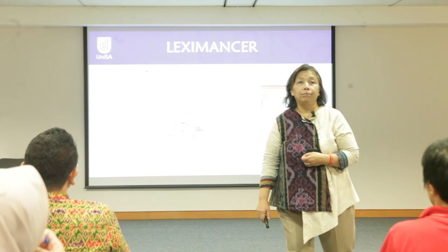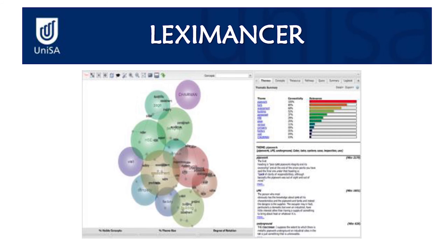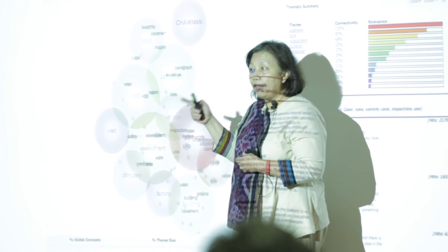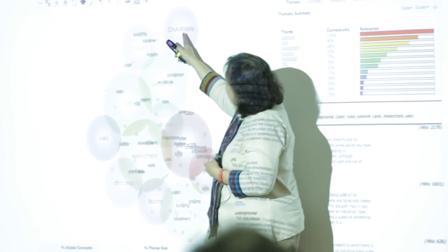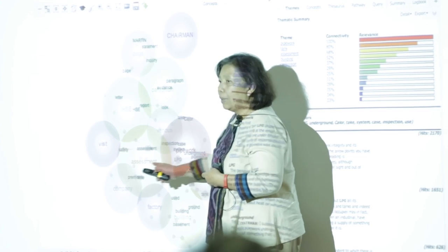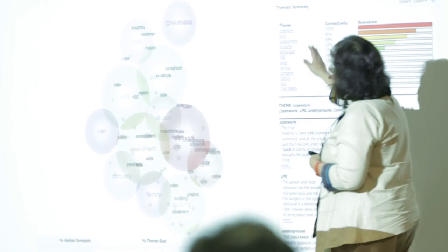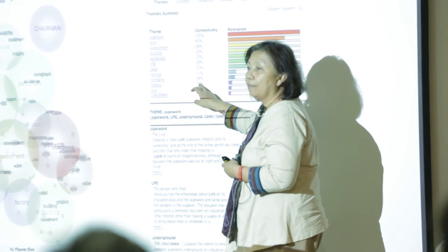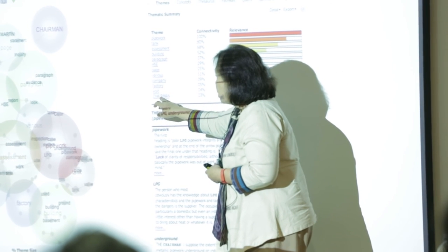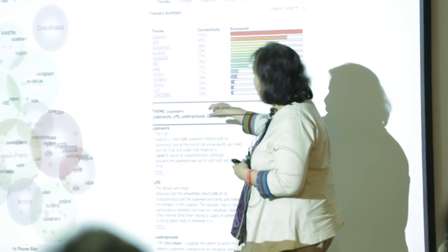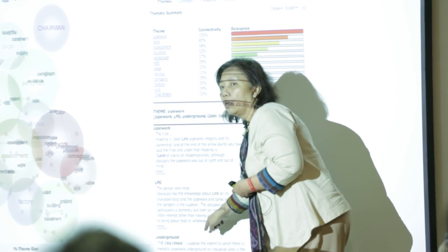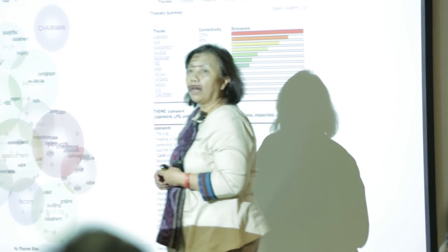This is Lexi Mancer. It looks complicated but it's not. The difference between Lexi Mancer and NVivo is that in Lexi Mancer, the coding is done automatically — the software creates the codes, not you. In NVivo, you create the coding yourself. Lexi Mancer produces concepts automatically. It also generates numbers — how many times a person talked about 'chairman,' for instance. You can click on a concept and see the context, and you can run it as a regression.